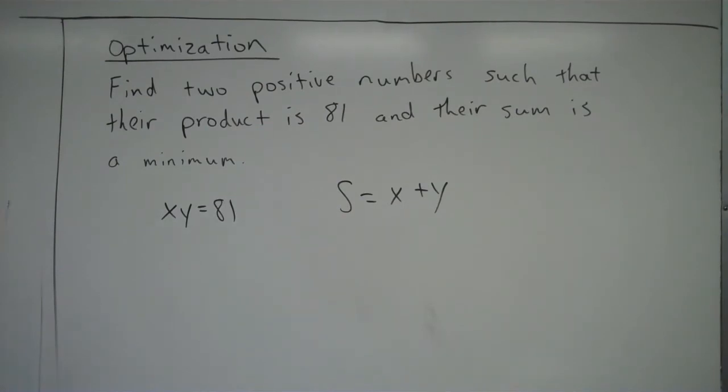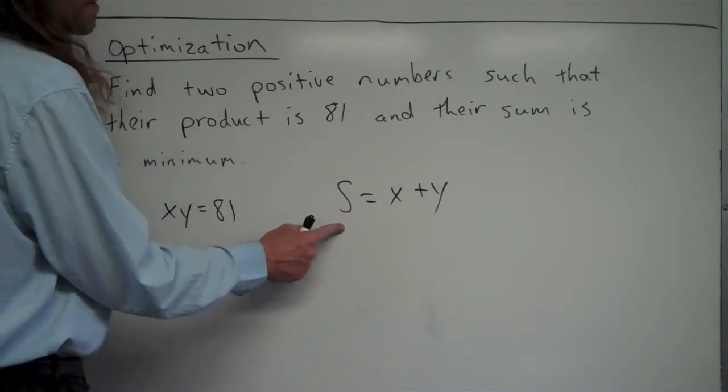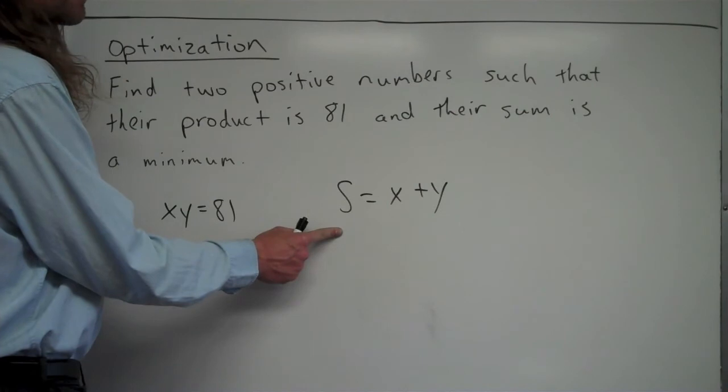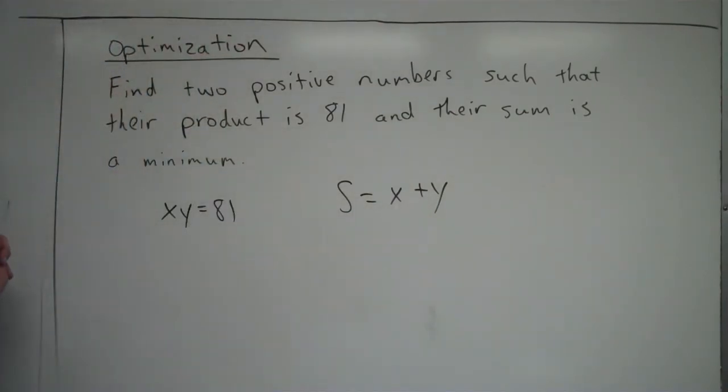Because minimums generally can at least occur there. I shouldn't say always occur there, because with other things it can occur other places, but they could occur there. So what I'd like to do, here's S. I want to find where S is a minimum. I should find the derivative, S prime, and see where it equals zero. But I have two variables going on here. I'd like to eliminate one of those variables first.